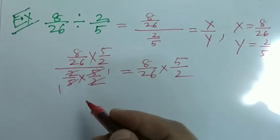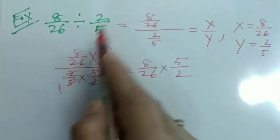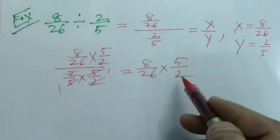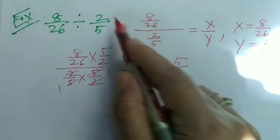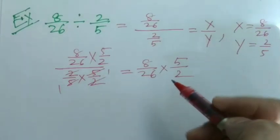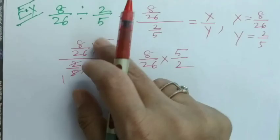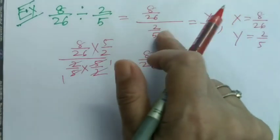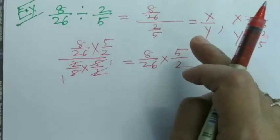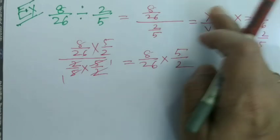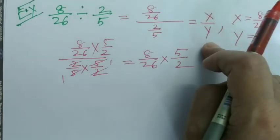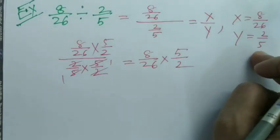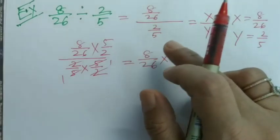This is equal to 8 by 26 into 5 divided by 2 and this denominator becomes 1. What have we found? Ultimately our sum 8 divided by 26 divided by 2 divided by 5 is converted to 8 divided by 26 into 5 divided by 2, where 5 by 2 is the reciprocal of 2 by 5.